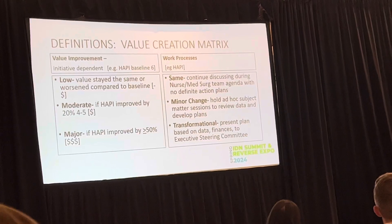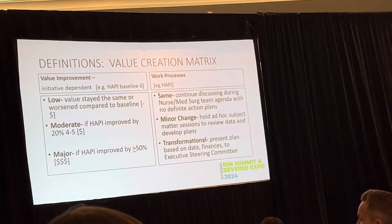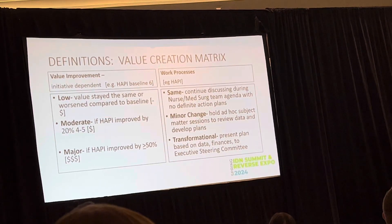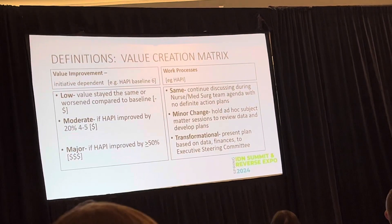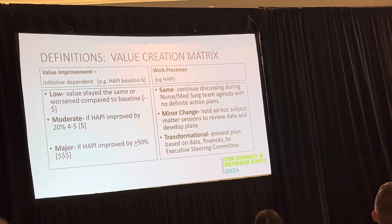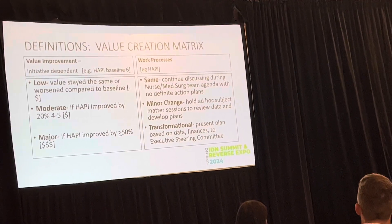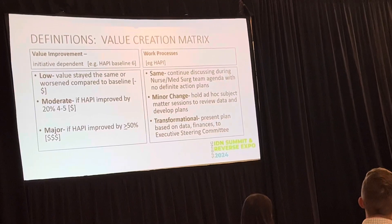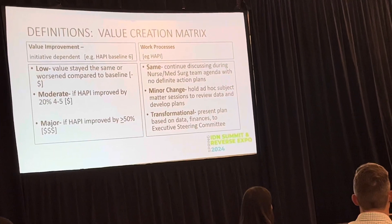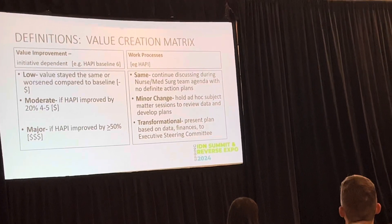That's why we talked the way we did today. Moderate on the value creation matrix means if it's improved — say by 20%, if I started at baseline with six events and dropped it by 20%, that's still going to be a good dollar sign. Major improvement means improved by 50% or more — three dollar signs — and I can help support that at all executive levels because we're doing better for patients.